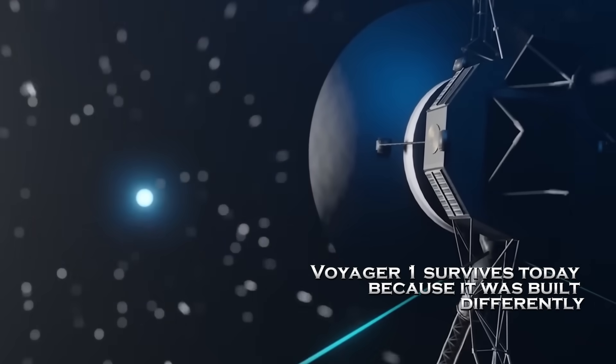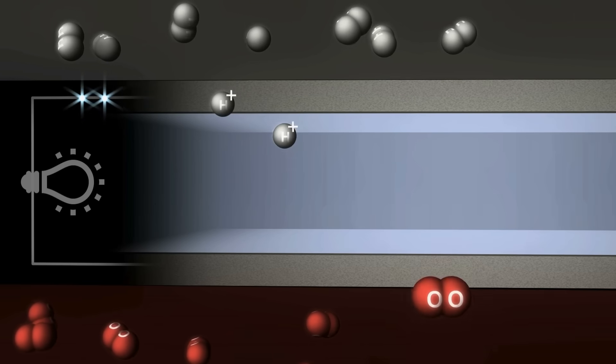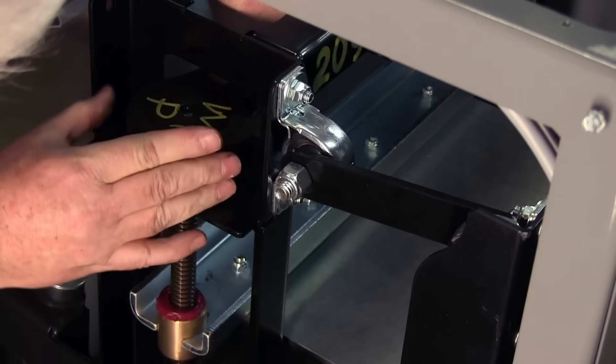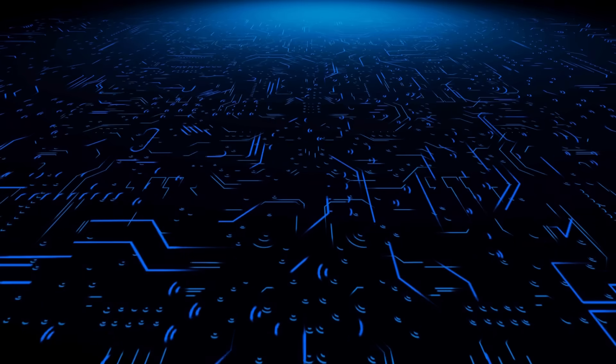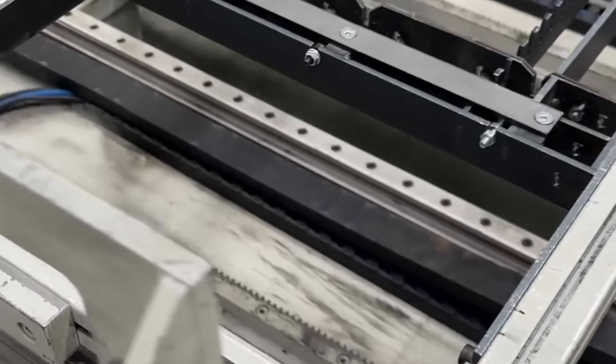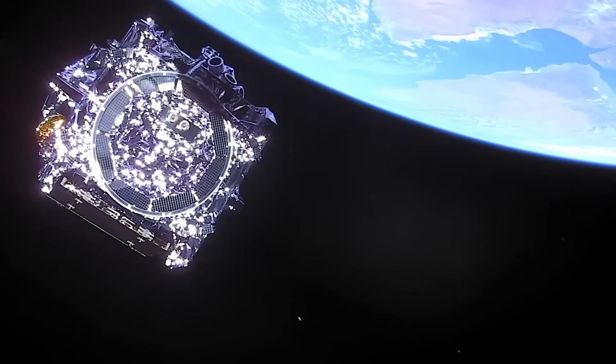Voyager 1 survives today because it was built differently. Instead of solar panels, it relies on radioisotope thermoelectric generators, RTGs, which convert the heat from decaying plutonium-238 into electricity. This design allows the spacecraft to function where sunlight is almost non-existent.